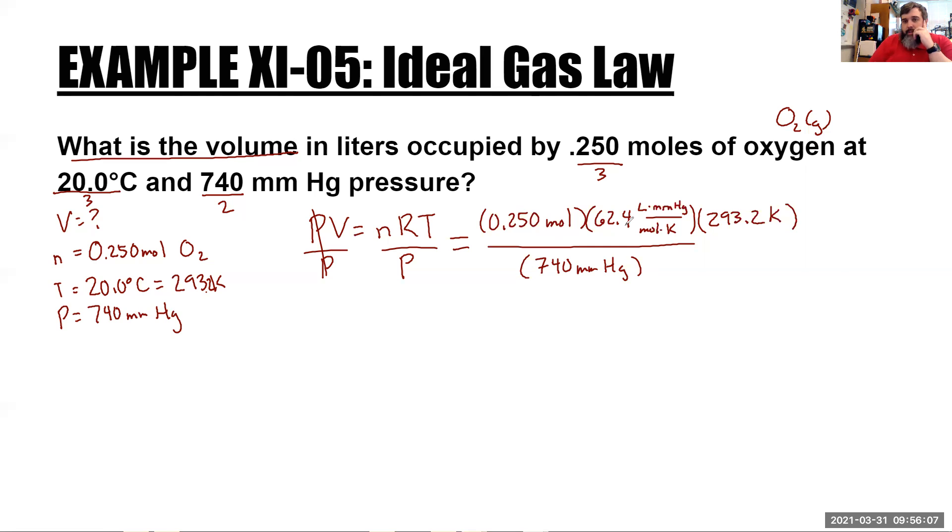All right. Now let's look at the units. So moles is on the bottom here. It's on the top here. So moles cancels. Kelvin's on the bottom. Kelvin's on the top. So Kelvin's cancels. Millimeters of mercury is on the bottom. It's on the top here. So that cancels. And that leaves us with liters, which since we're looking for volume, actually makes a lot of sense.